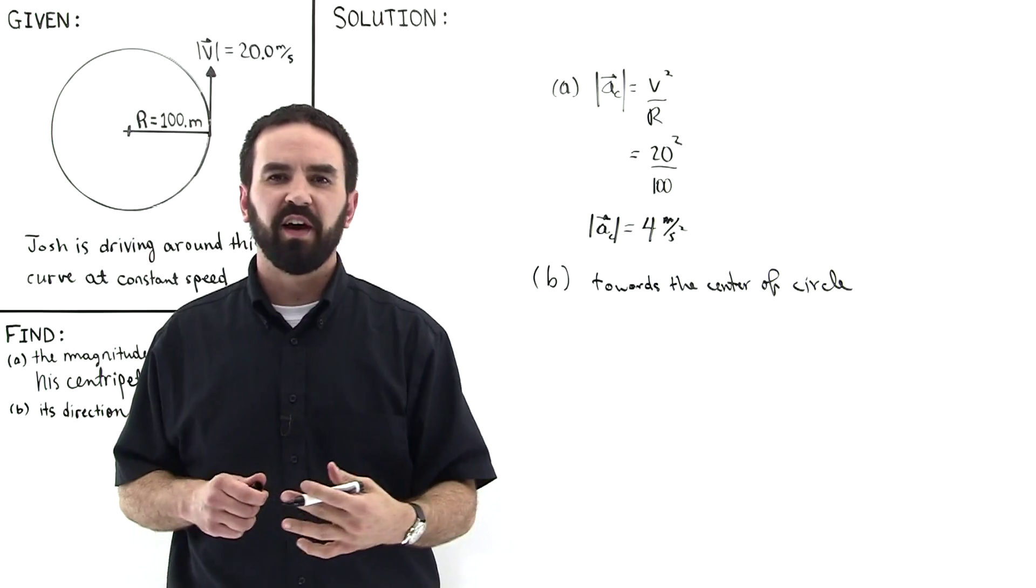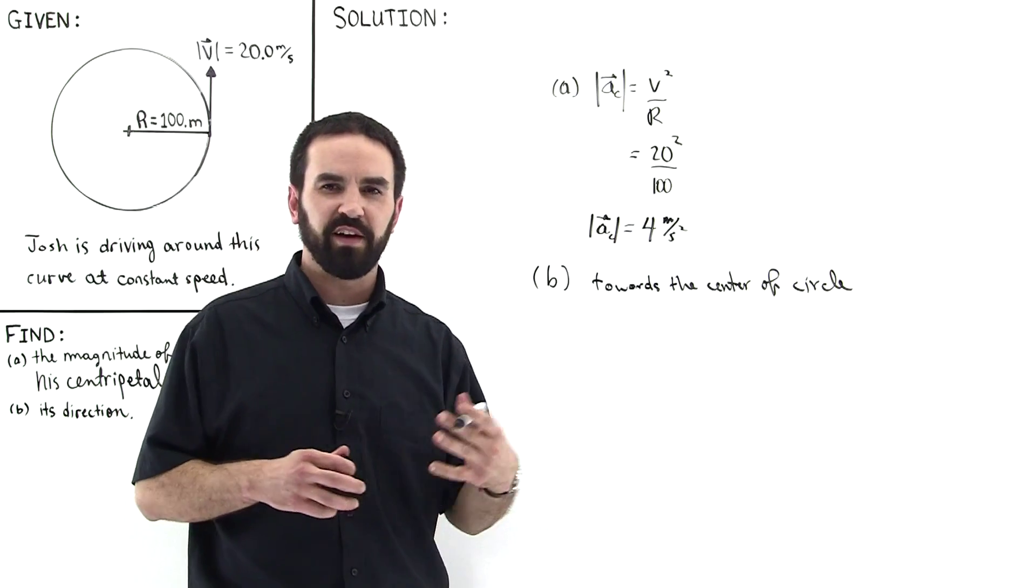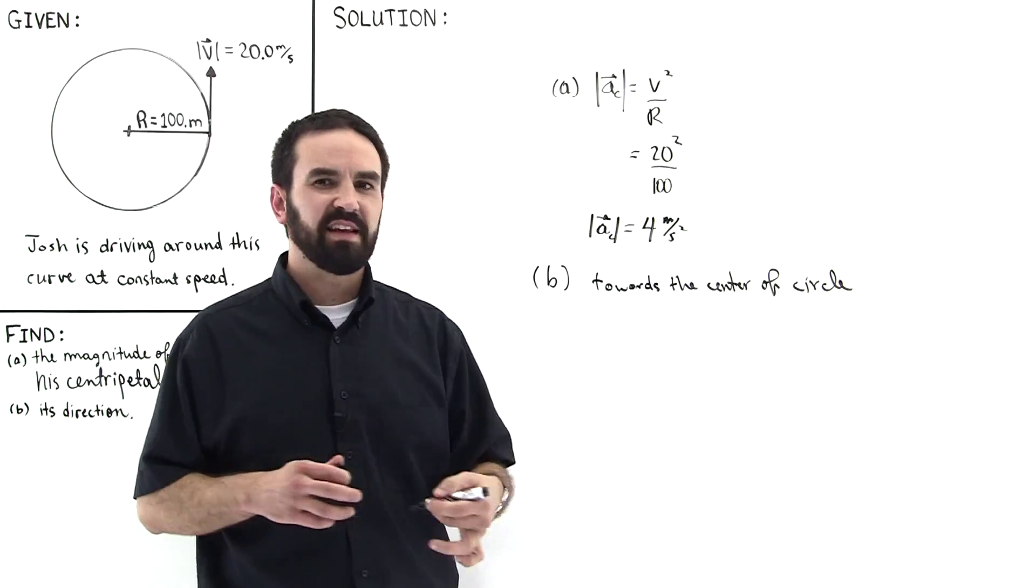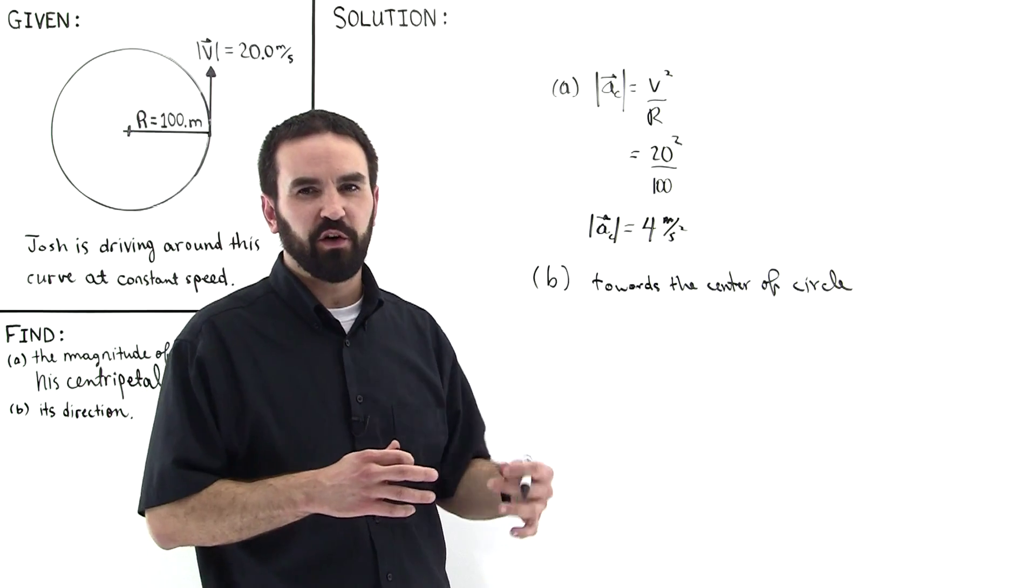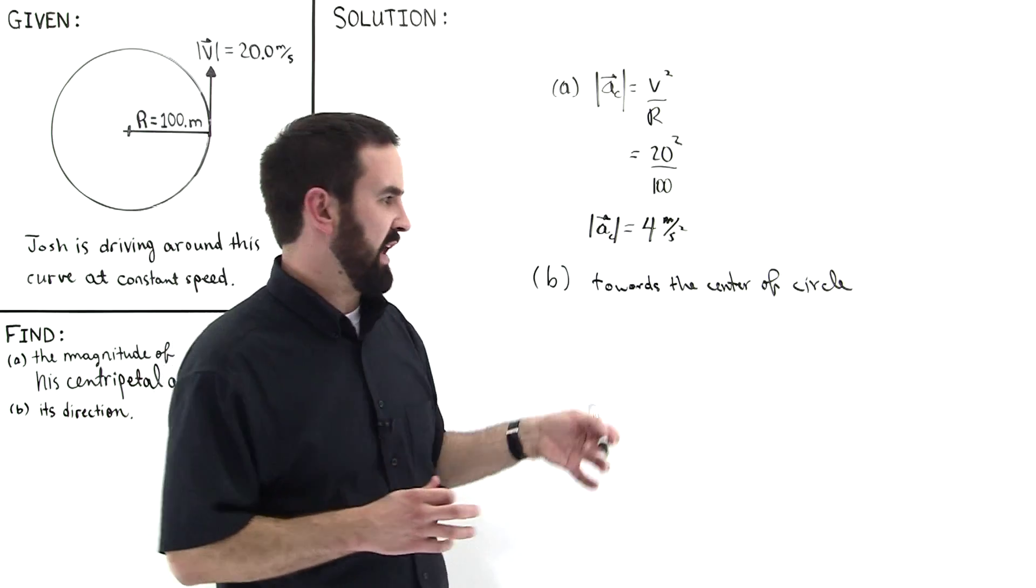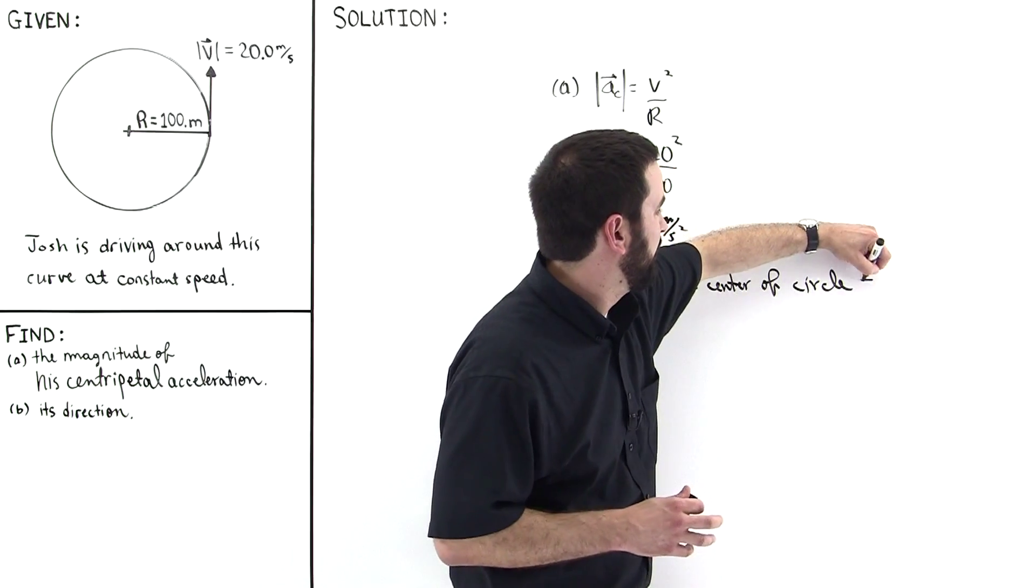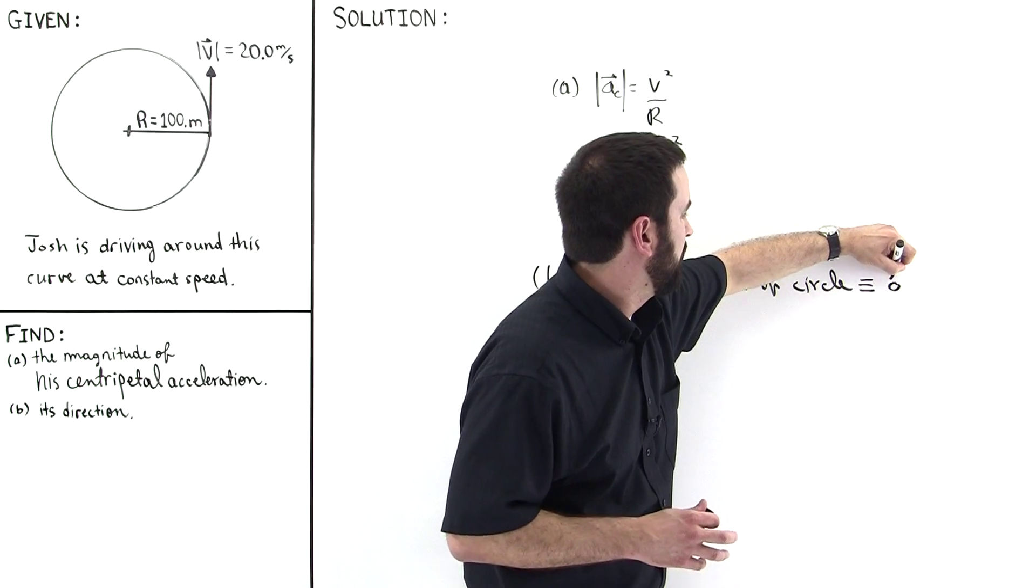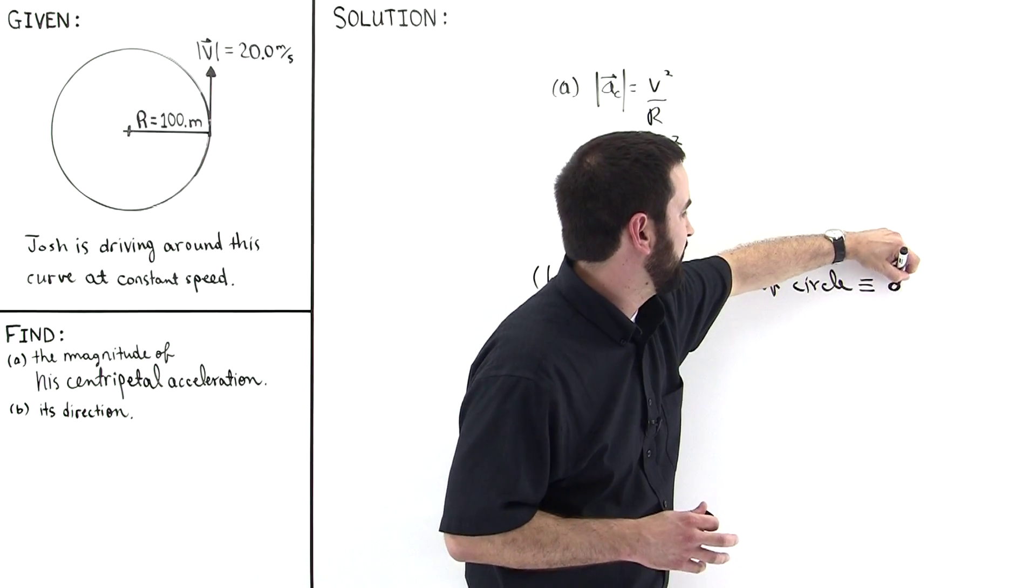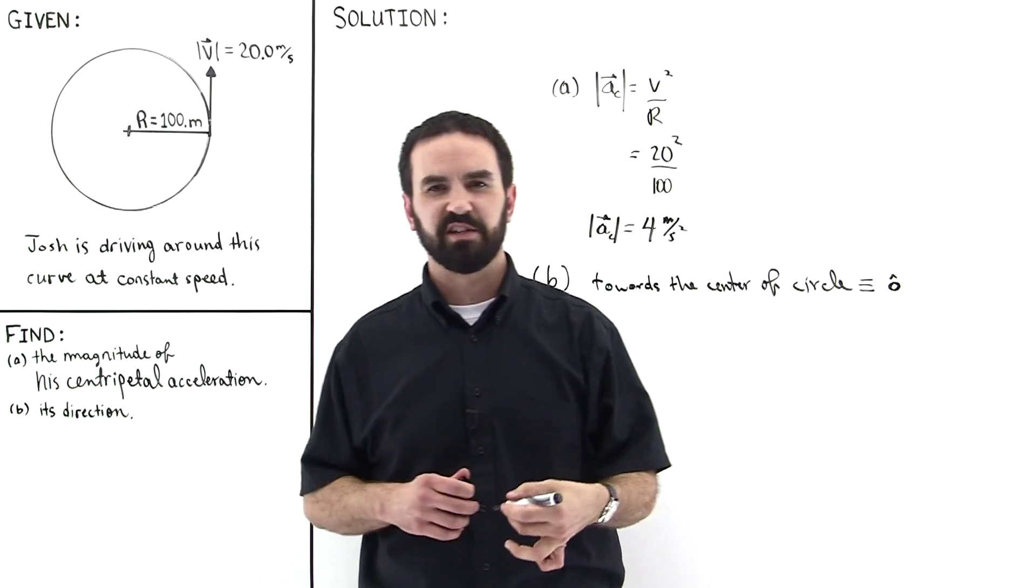But we're going to add to this, we're going to define a direction. We're going to say that towards the center of the circle is defined by unit vector o hat, lowercase o hat. So this is equivalent to lowercase o hat like this. So this is a unit vector pointing towards the center of the circle.